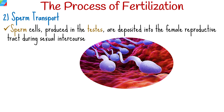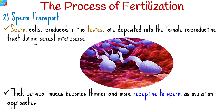Sperm cells, produced in the testes, are deposited into the female reproductive tract during sexual intercourse. They must navigate through the cervix, which has thick mucus that becomes thinner and more receptive to sperm as ovulation approaches. Some sperm may be lost or die along the way, but millions are typically released in a single ejaculation to increase the chances of reaching the egg.